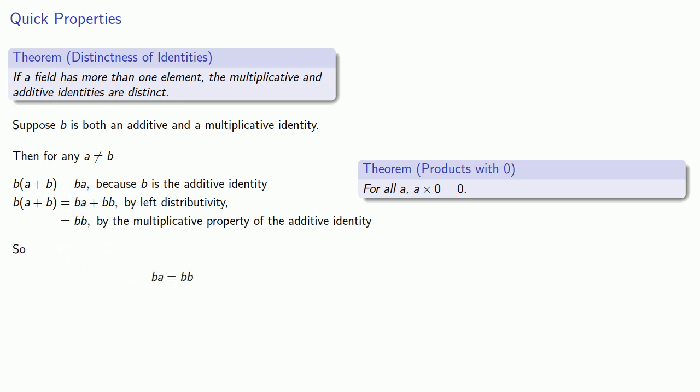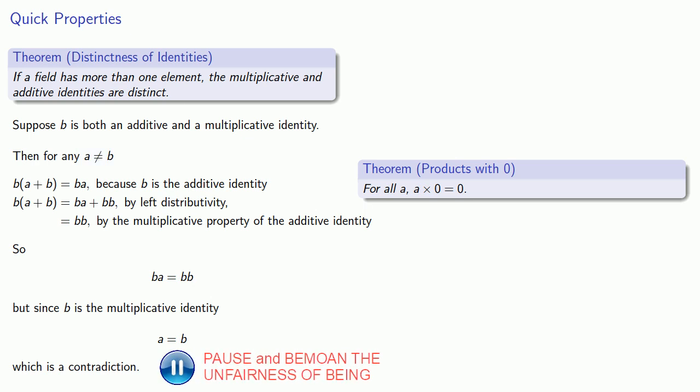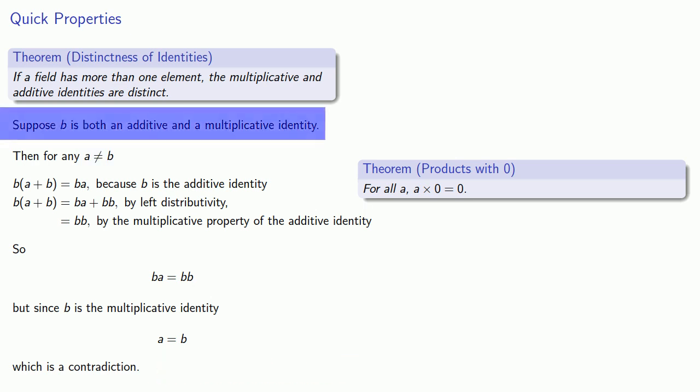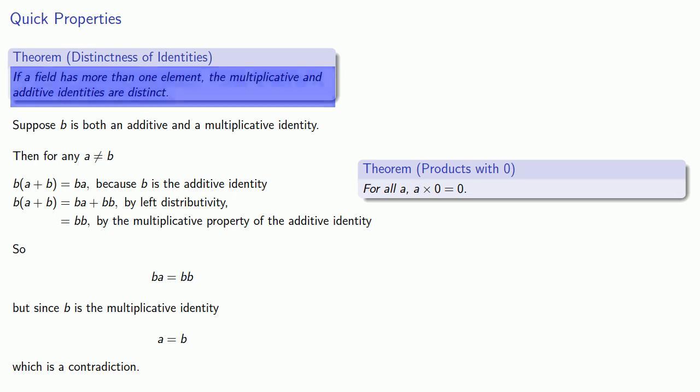And so BA has to be BB, but since B is the multiplicative identity, that says that A has to be B. But we assume that A is not equal to B, and so this is a contradiction. That's okay because our assumption was that B was both an additive and multiplicative identity, and we wanted to prove that it wasn't. So the contradiction tells us that our original assumption must be false.